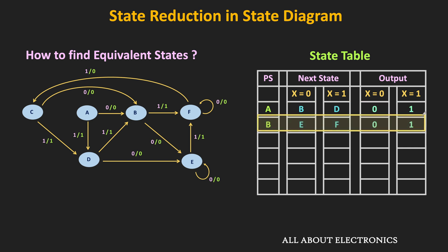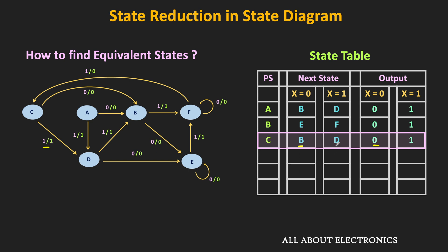On the other hand, in the same state, when the input is equal to 1, then it will go to the D state, and at that time its output is equal to 1. If the machine is in the B state and the applied input is equal to 0, then it will go to the E state, and its output will be equal to 0. If the machine is in the C state and the present input is equal to 0, then it will go to the D state, with output equal to 0. On the other hand, if the input is equal to 1, then it will also go to the D state, with output equal to 1.